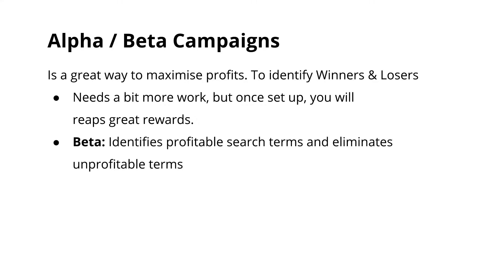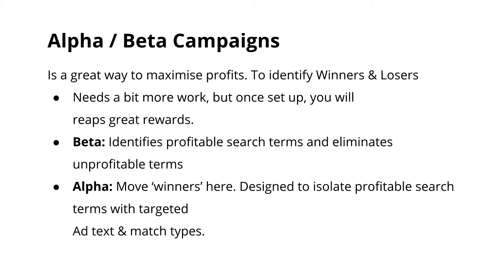So we start off with beta. What is a beta campaign? A beta campaign identifies profitable search terms and eliminates, or tries to eliminate, unprofitable search terms. We find these from our search term report. The alpha campaign is the campaign of the winners — here we move all the profitable or high converting keywords into its own campaign, which we call alpha, and this will isolate all the winners from the losers.